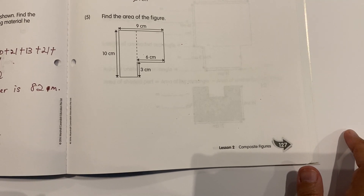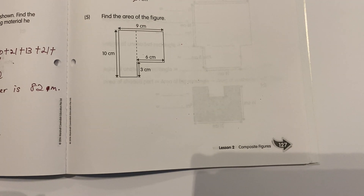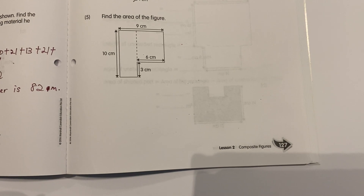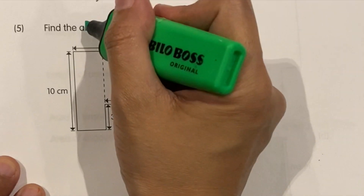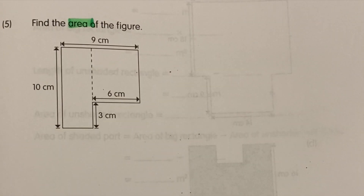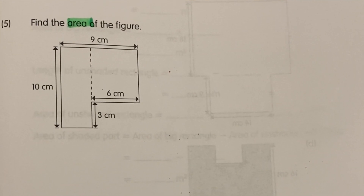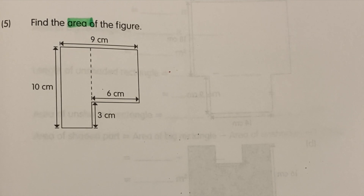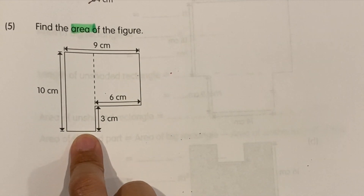Alright, hi boys and girls, I'm back. We're starting with question 5 of page 127 of your workbook — find the area of the figure. Remember, because it's area, everybody please highlight the word 'area' — you're no longer finding perimeter. Before you start, try to cut out and find the squares and rectangles from the composite figure.